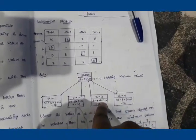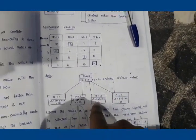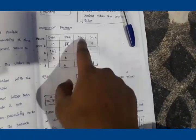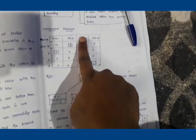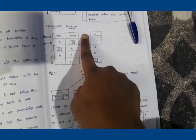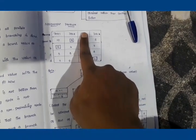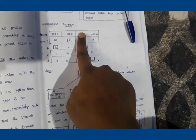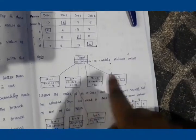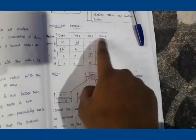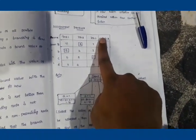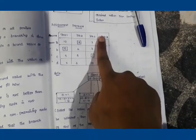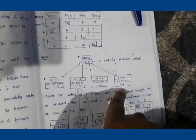If A is assigned to Job 3, the cost is 7. Hiding Job 3's column, for Person B the minimum is 4, for Person C the minimum is 5, and for Person D the minimum is 4, giving a total of 20. If A is assigned to Job 4, the cost is 8; for Person B the minimum is 3, for Person C the minimum is 1, and for Person D the minimum is 6. The minimum lower bound among all four nodes is 10, so we continue branching from A assigned to Job 2.